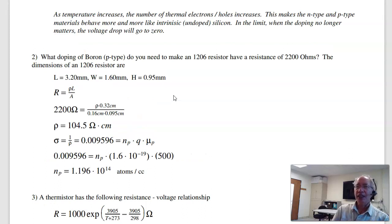Problem two is building a resistor. Suppose I have a 1206 resistor, which has these dimensions. What doping of boron do I need to make it 2200 ohms? The base equation is the resistance is the resistivity times length over area. I know three of the terms, solve the resistivity, and the resistivity is 104 ohm centimeters.